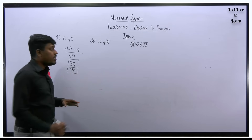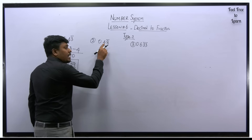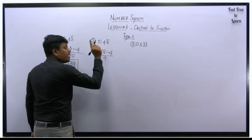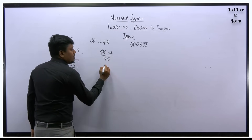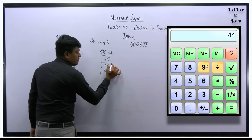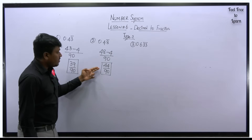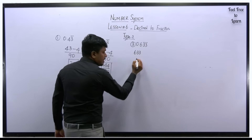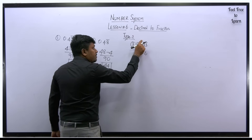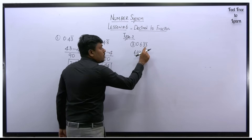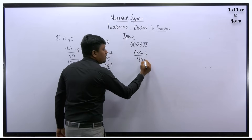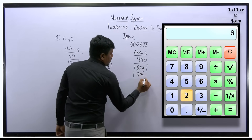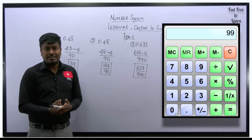For 0.48 bar (bar only on 8): write 48 as numerator, subtract the non-bar digit 4, giving 44 in the numerator; denominator is 90. So 44/90, which can be simplified. For 0.633 bar (bar on 33, not on 6): write 633 as numerator, subtract 6, giving 627; denominator for two bar digits is 99, one non-bar digit gives 0, so 990. Answer: 627/990.